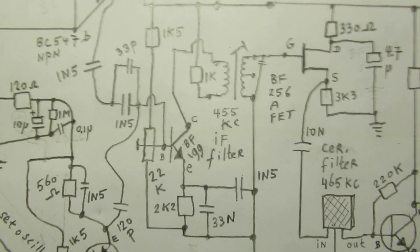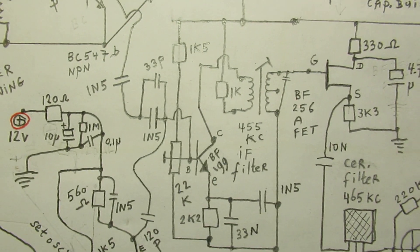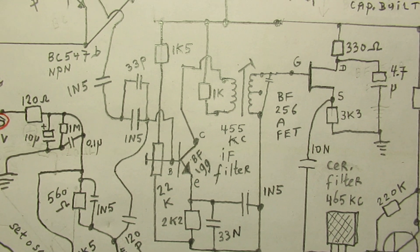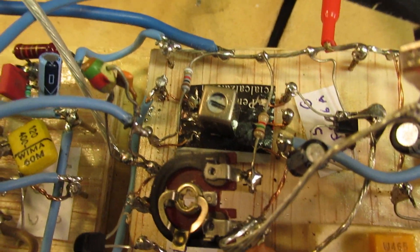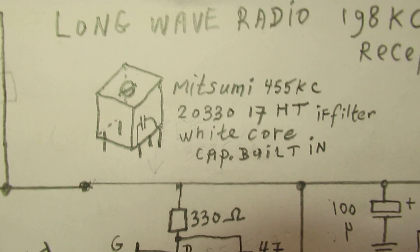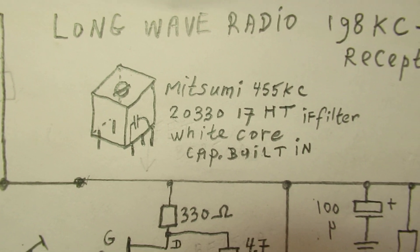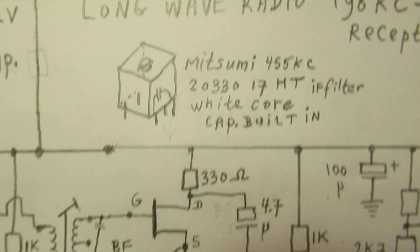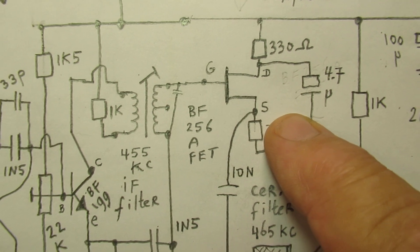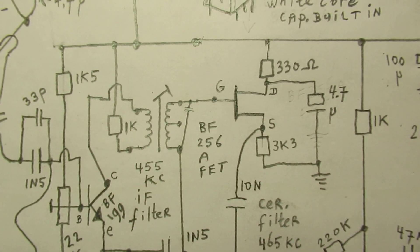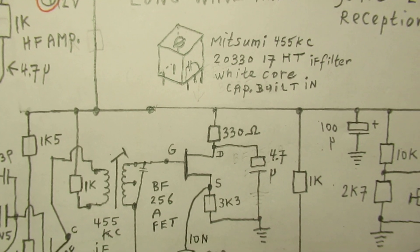And I will get in detail. Here we have the mixer, made with a BF199. It has in its collector lead a coil filter of 455 kilocycles. It's here. It has a white core and the type number is this. But you can also use another 455 kilocycle filter from another brand. Here is the field effect transistor connected to the secondary of the coil, the IF coil.